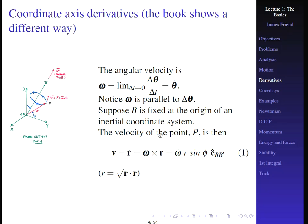You might be used to writing the velocity as |ω||R|sin(φ), where φ is the angle between ω and R. The result lies along the unit vector in the B–B' direction. Notice we use Ê_{BB'} rather than Ê_X, Ê_Y, Ê_Z or Ê_1, Ê_2, Ê_3 — the subscript represents whatever direction we happen to need. The length of R is conveniently written as √(R·R).